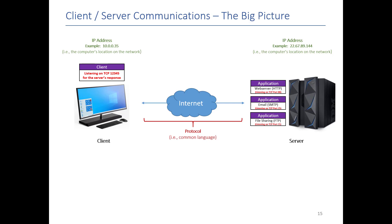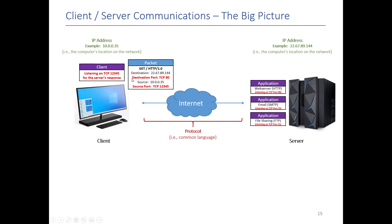As you can see, this diagram keeps getting filled up. We started off with our protocol, which defined our language. We added the IP address so that we knew where each computer was on the network, and notice that each one has a unique IP. Then we introduced ports — each application is listening on one or more ports using either TCP or UDP for information intended for it. The client is also listening on a port for a response from the server. Now we finally have all the information we need to generate our packet: the destination IP address and port, plus our own IP address and the port we're listening on.